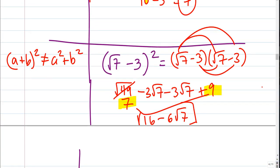You might ask why doesn't that become 10. Those are not like terms — you cannot add 16 and 6 root 7 unless they are both radical 7s. So you've got to know the previous section so we can build on it.